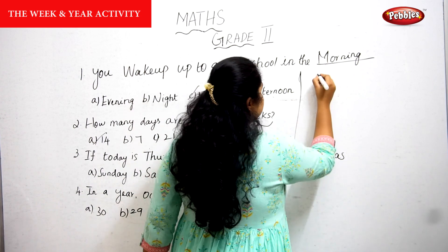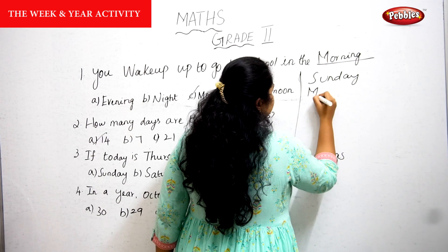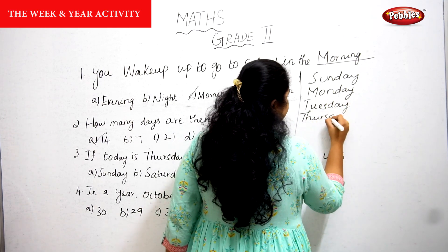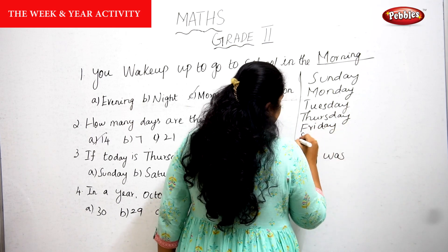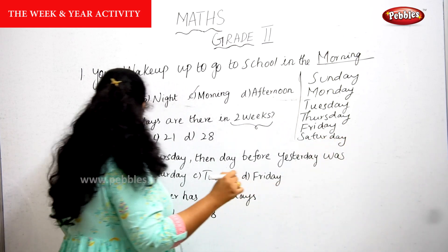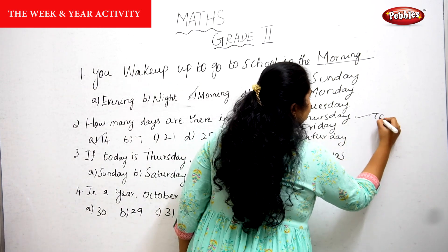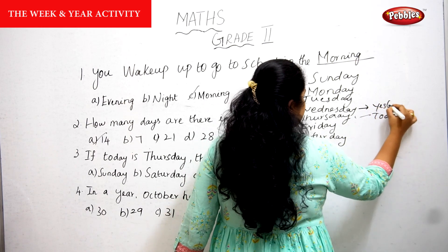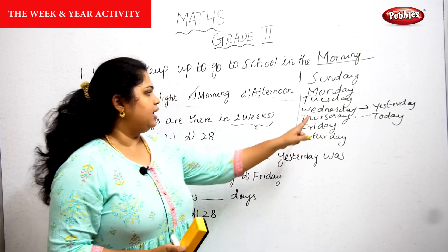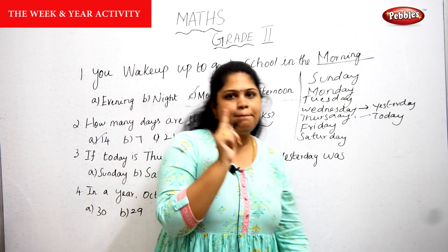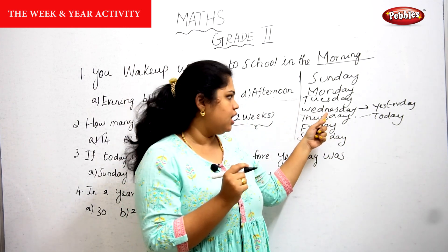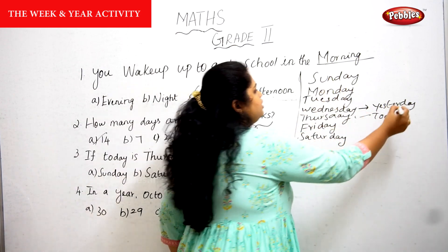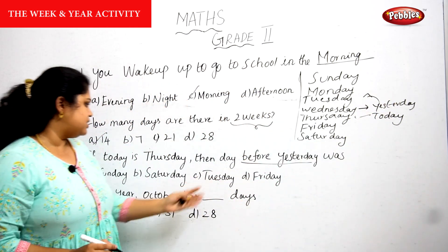Let me write the days of the week so it will be easy to understand: Sunday, Monday, Tuesday, Wednesday, Thursday, Friday, Saturday. Today is Thursday. Yesterday means one day back — that is Wednesday. Day before yesterday means before yesterday, which is Tuesday. So Tuesday is the correct answer.